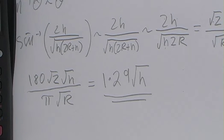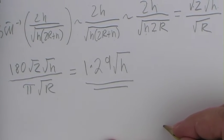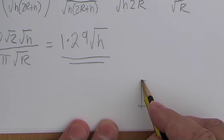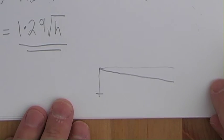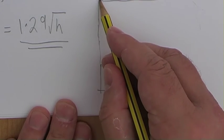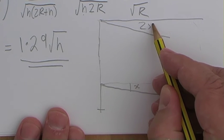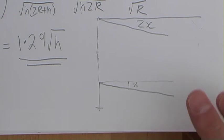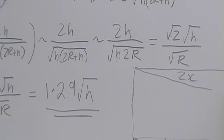This approximation gives you accuracy to three significant figures up to at least 100 miles, so it's a good approximation. It also reveals the relationship between angle of depression and height: the angle falls off with the square root of the height. If you go four times higher, the angle of depression only doubles — it doesn't get four times bigger. So the angle is growing, but not in a linear relationship with height.